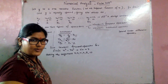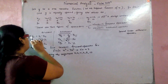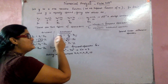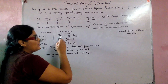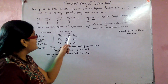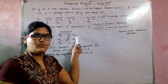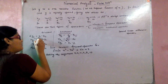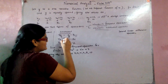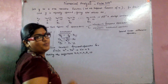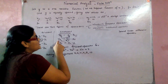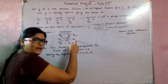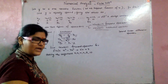Now talking about the backward difference operator: it is denoted by nabla (∇). The backward difference operator for yᵣ is defined as the difference of that value with its preceding value. So for the backward difference operator of y₁, we take y₁ minus y₀; for y₂ it is y₂ minus y₁.